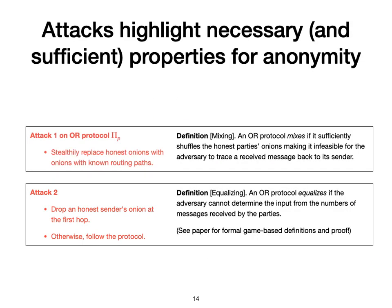These two attacks highlight necessary and sufficient properties for anonymity. The first attack highlights a need for mixing: an onion routing protocol mixes if it sufficiently shuffles the honest parties' onions, making it infeasible for the adversary to trace the received message back to the sender. The second attack highlights a need for equalizing: an onion routing protocol equalizes if the adversary cannot determine the input — who's sending to whom — from the numbers of messages received by the parties.